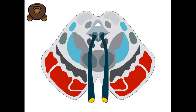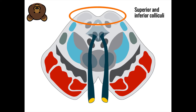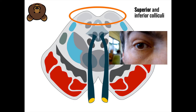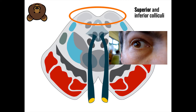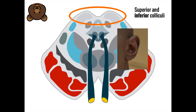The chin of the bear is known as the tectum. The tectum contains two paired structures involved in processing special sensory information. The higher pair, the superior colliculi, are involved in controlling eye movements in response to visual information, while the lower pair, the inferior colliculi, are involved in relaying auditory signals to the thalamus.